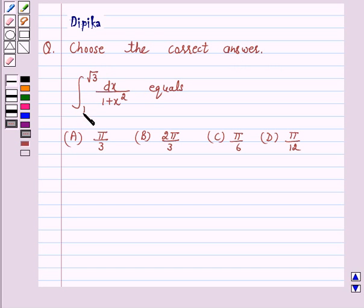Integral from 1 to root 3 dx upon 1 plus x square equals: (A) pi by 3, (B) 2 pi by 3, (C) pi by 6, and (D) pi by 12.